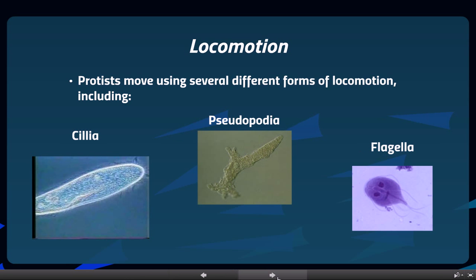Locomotion is the next topic on your graphic organizer, and we have talked about this before, very close to the beginning of the year. We even watched some videos on these different types of movement, just to review so that you can fill out your stuff. Cilia are like the picture on the left — that's a paramecium. If you look real close, you can see it almost looks like they have little broom bristles on the outside edges of the cell. Those are cilia, and they move in uniform movement to push them forward and back.